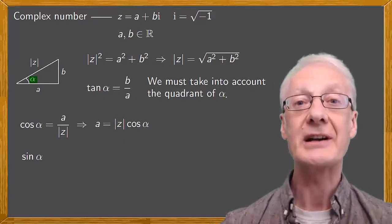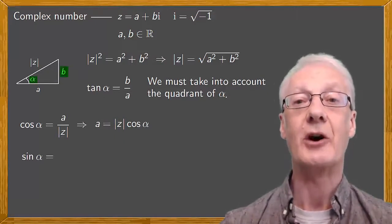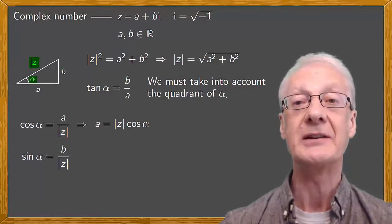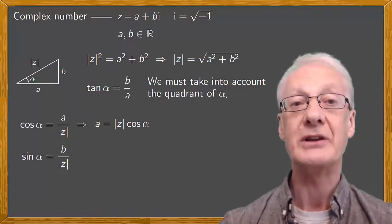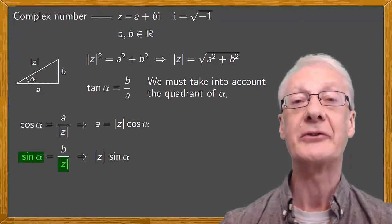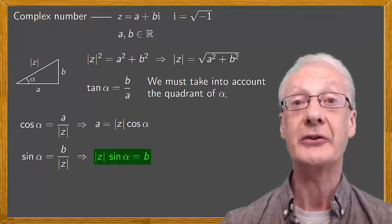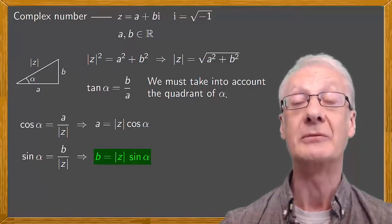Now for the sine of alpha. It's equal to the opposite side b divided by the hypotenuse, which is again the modulus of z. Rearranging this, we obtain that the modulus of z times sine alpha is equal to b. Or turning this around, b is equal to the modulus of z times sine alpha.